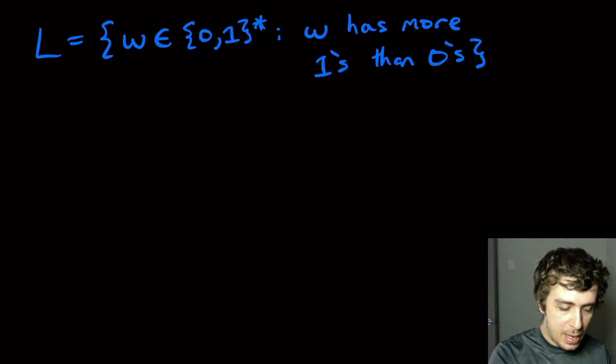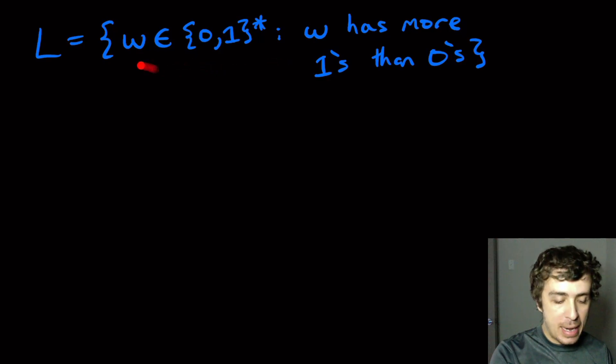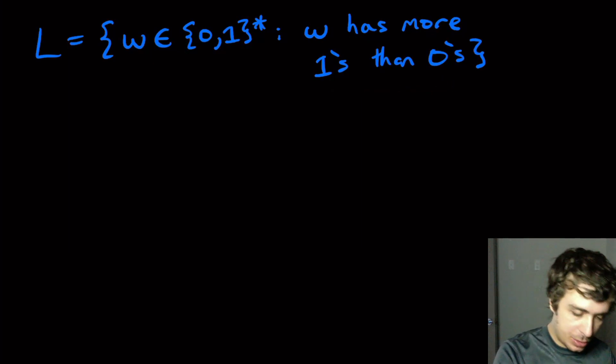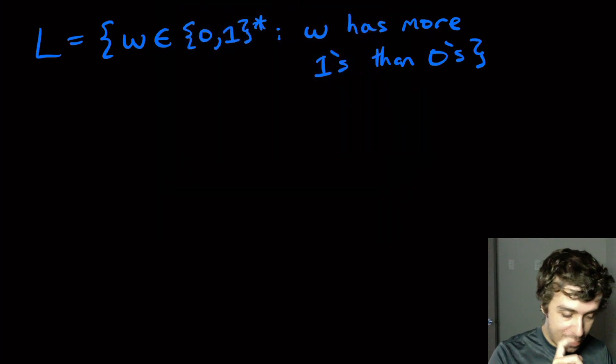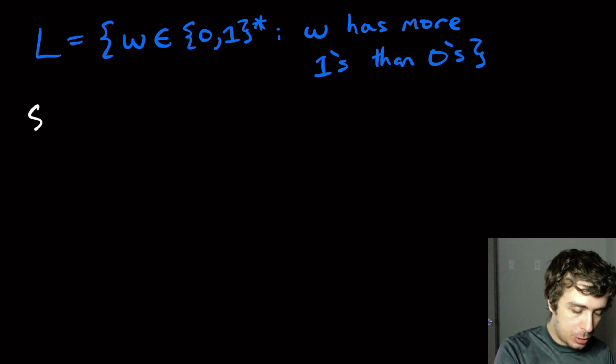All right, so let's prove that this language, which I'm going to call L, is not regular, where W is any string in 0, 1 star, and W has more 1s than 0s. So let's start the proof as we normally would. So we would suppose that L is regular.